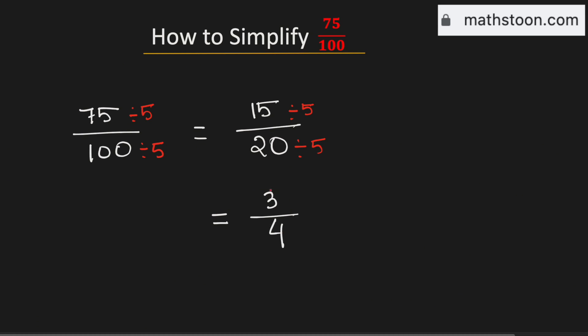Now see that there are no numbers which can divide both 3 and 4 other than 1. So we can say that 3 by 4 is a simplified reduced form of the fraction 75 divided by 100.